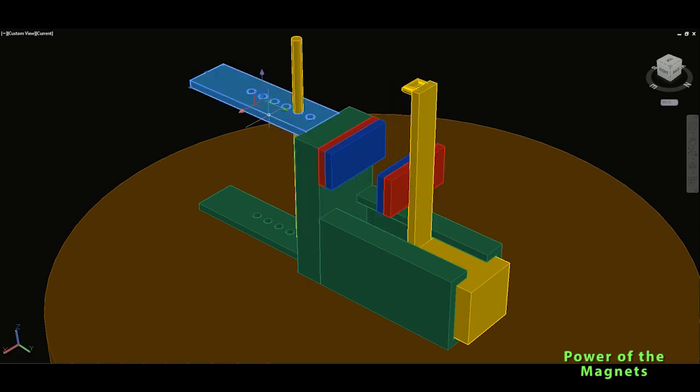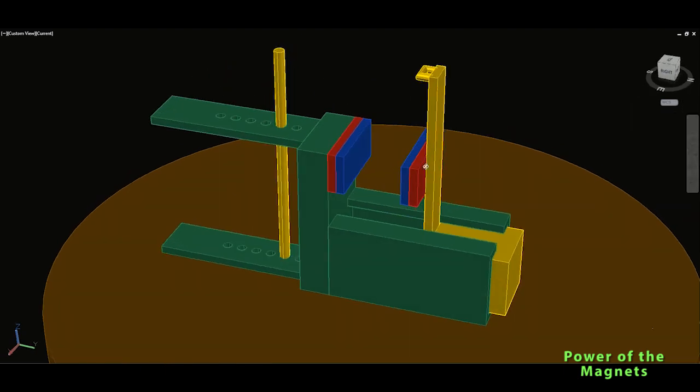And then we will have on the other side where it's the fixed side, here will be the device which will measure the newtons. The force which will be in newtons of how much these two magnets will repel each other.